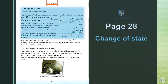Page 28: Change of state. Halat ka tabdil hona. Matter can change its state — maada apni halat badal sakti hai, tabdil kar sakti hai. Put a glass full of ice cubes near a sunny window — glass mein baraf ke tukray daalen aur usko khidki ke paas rakh dein jahan pe dhoop aa rahi ho. After some time you will see water in the glass. What has happened? The ice has melted — baraf pighal gayi. Ice is a solid — ice yani baraf solid hai. In a warm place it becomes water, which is a liquid.